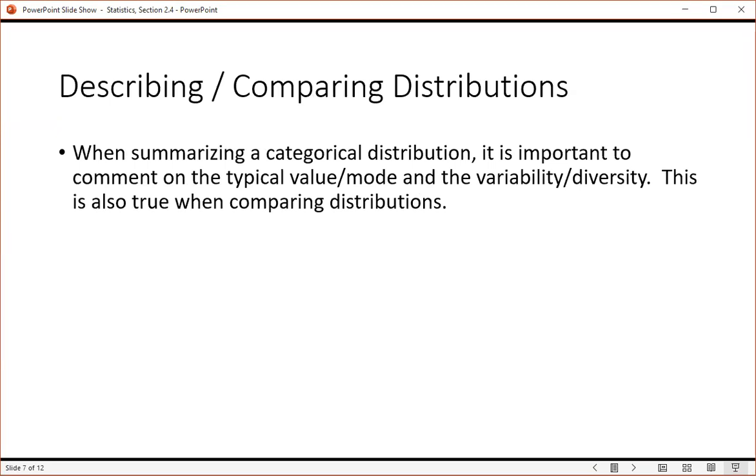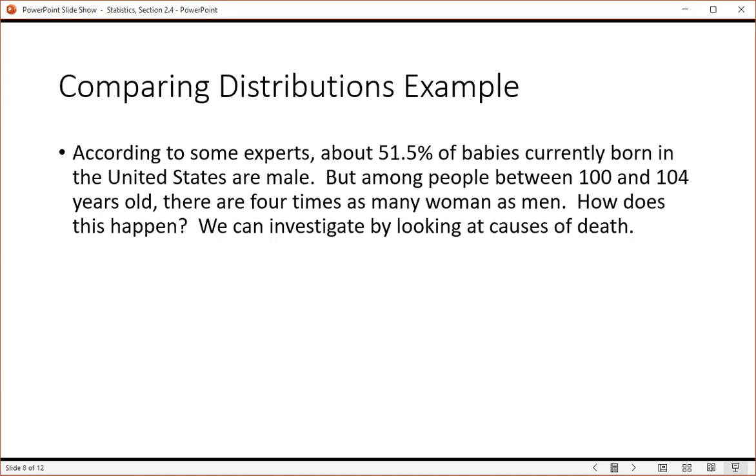When summarizing a categorical distribution, it is important to comment on the typical value, or the mode, and the variability, or the diversity. This is also true when comparing distributions. Let's look at an example.